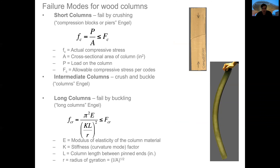There are several types of failure when we speak about columns. First, when we have short columns, usually what will happen is that the column will crush, as you can see where compression is applied to a piece of wood. This kind of column will be calculated according with several factors, and the most important element is the actual compressive stress, which is the load divided by the cross-sectional area, and it must be less than the allowable stress FC.